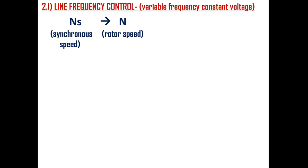First let's see the variable frequency constant voltage method. In an induction motor, if we vary the synchronous speed then it is possible to vary the rotor speed. The basic equation for synchronous speed is 120F divided by P, where F is the line frequency of the AC voltage and P is the number of magnetic poles. So if the frequency of the line voltage changes, it is possible to vary the synchronous speed and hence the rotor speed.